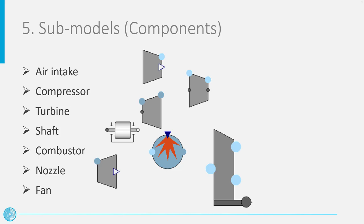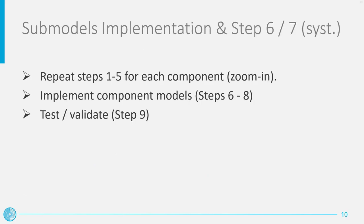Once the main components of the system model have been identified, the focus of the modeling activity shifts from the system to the implementation of the single component models. For this purpose, for each identified component, we have to go first through steps 1 to 5 of the method, so that we gather the required information to develop a mathematical model for them. For the sake of brevity, the implementation of the component models will not be treated here. This is something you should be able to carry out by yourself at this stage of the course. In the follow-up videos, we will however discuss how the different engine components can be modeled for the purpose of system simulation.